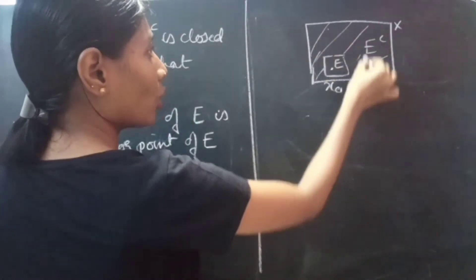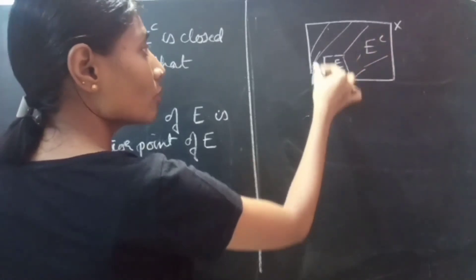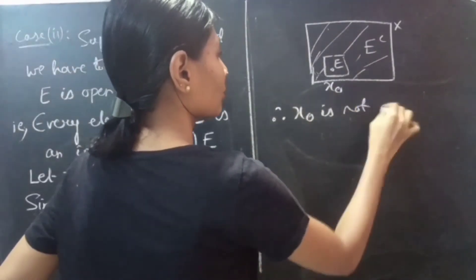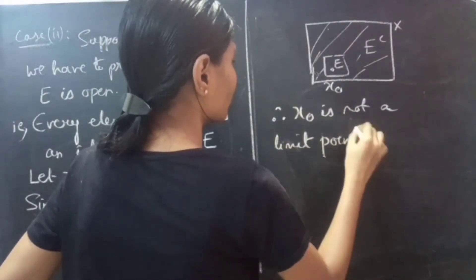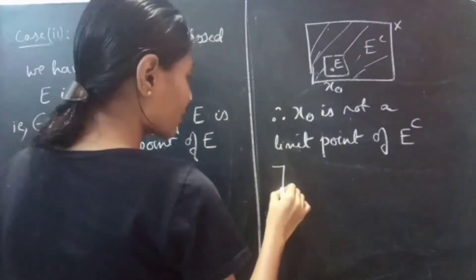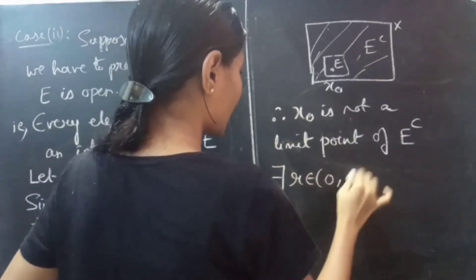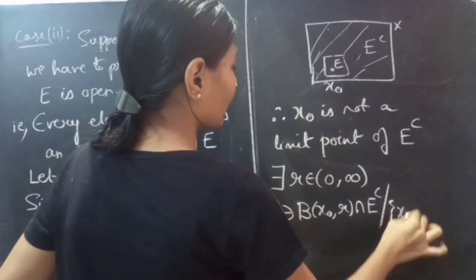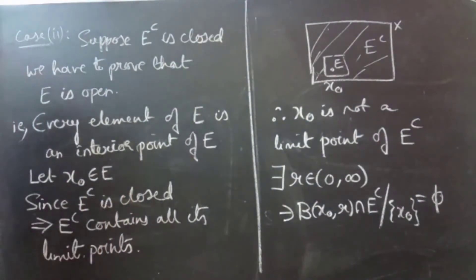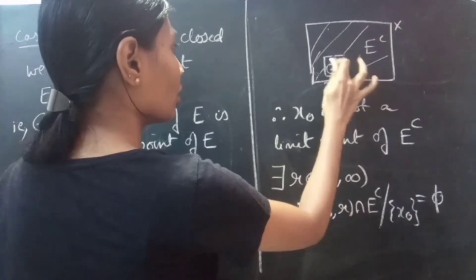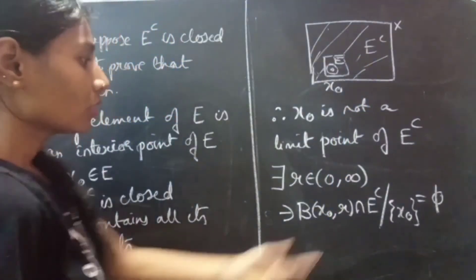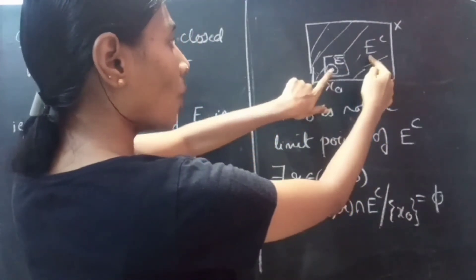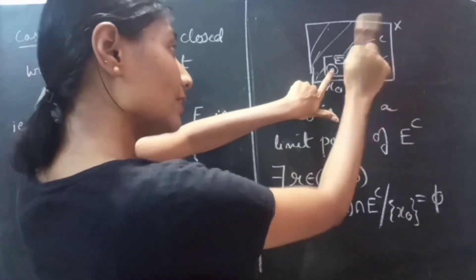E complement contains all its limit points. Since X naught is in E and the limit points of E complement exist in E complement itself, we can say that X naught is not a limit point of E complement. Therefore, there exists R in (0, ∞) such that B(X naught, R) ∩ E complement excluding X naught equals ∅.